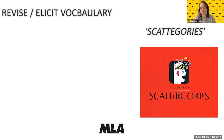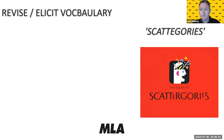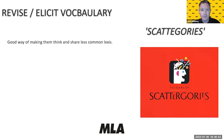Next up is Scattergories, which is actually a board game. It's similar to Taboo — something you can buy but can easily recreate as a classroom activity. Let us know in the chat if you've played it before. The objective is for students to think of the least common word within a topic, which gets them thinking about all the vocabulary they know and stops them using the same words again and again.